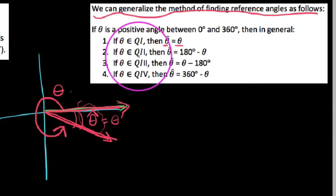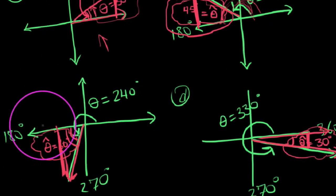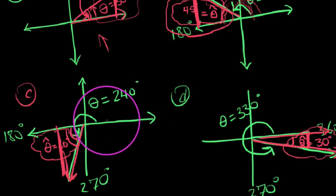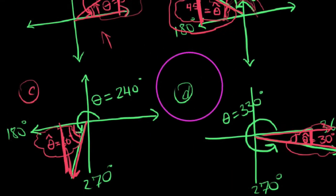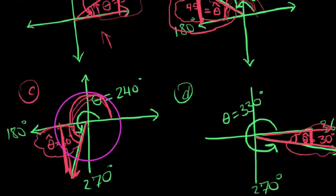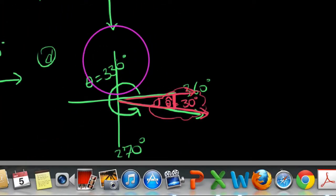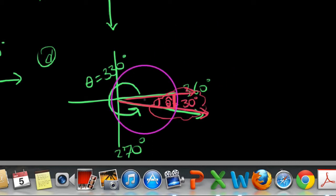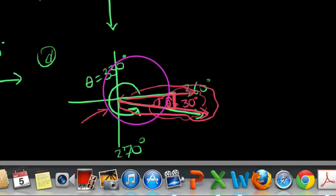If theta is in the third quadrant, we take theta minus 180. For example, with 240 degrees: take 240 and subtract off 180, leaving behind 60 degrees — which is the reference angle down here. And if theta terminates in the fourth quadrant, we take 360 minus theta. So for the 330-degree example, take the whole 360-degree rotation and subtract off 330, leaving behind the reference angle of 30 degrees.